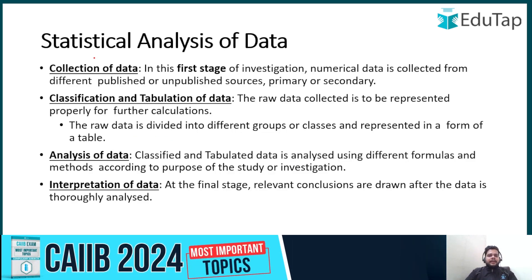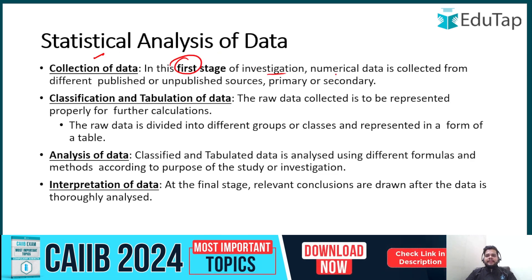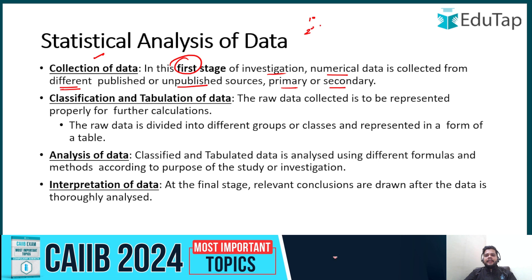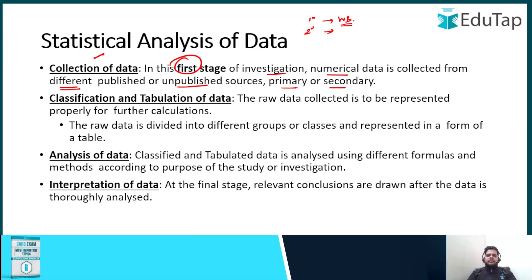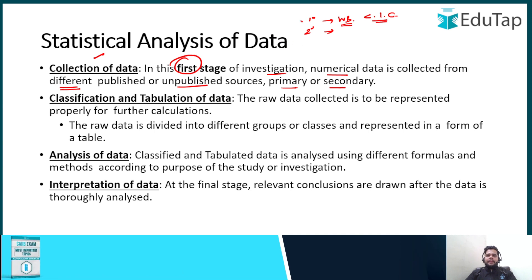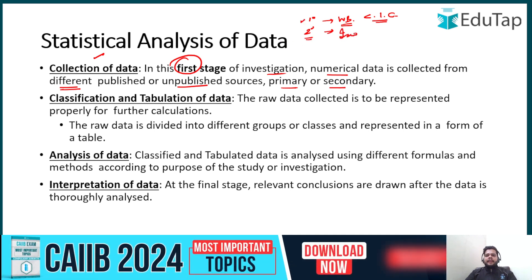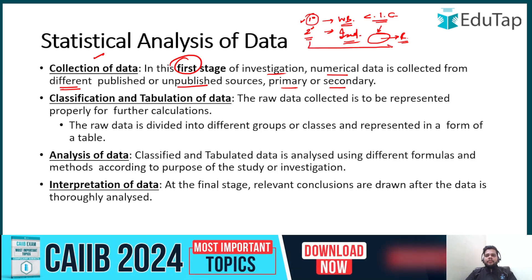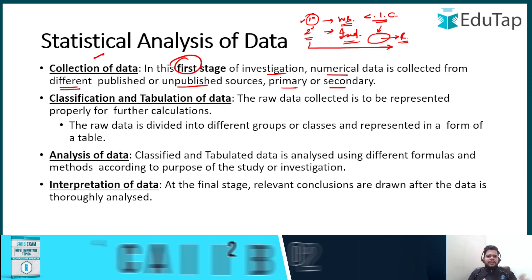Let's go through each one. Collection of data: in this first stage of investigation, numerical data is collected from different published or unpublished sources, primary or secondary. For example, data that the World Bank publishes regarding currency in circulation would be primary data. Secondary data would be if we extract that primary data for India and prepare a report — that becomes secondary data or a secondary report.